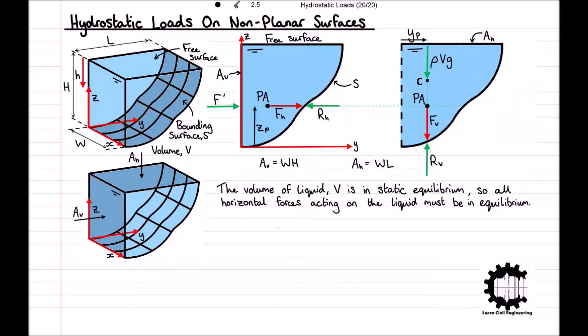Hence we get F' minus RH is equal to zero, and so F' equals RH. As we can see, F' and RH must have the same horizontal line of action, so therefore FH is equal to F'.